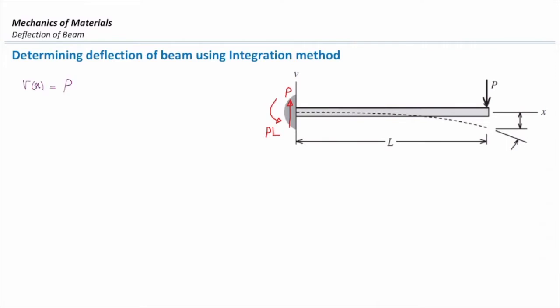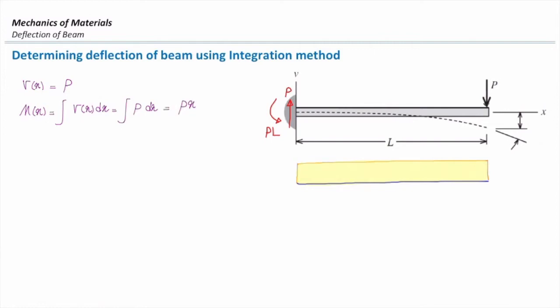The shear diagram for this case would be constant because there is no loading between the left end and right end. So the shear diagram would be constant. If I integrate it one time, I will get a moment diagram. The integral of P dx gives Px plus a constant, which I will call C1.